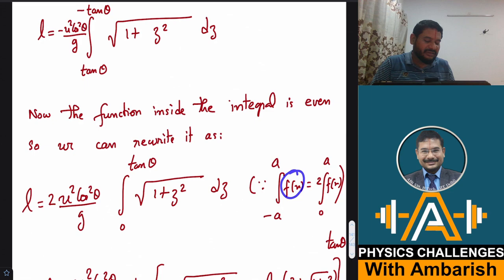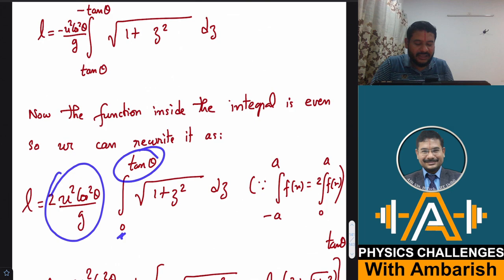So then you can just write it as from 0 to tan theta and this 2 here, because if fx is an even function so integration of fx from minus a to a is simply twice integration of fx from 0 to a whenever we have an even function. You'll see that directly from the area under the curve logic also. So area from minus a to 0 will be same as area from 0 to plus a. So that's why I can put a 2 over here and change the limits from 0 to tan theta and still I have this integration under root of 1 plus z square.